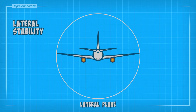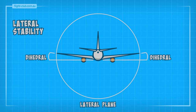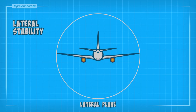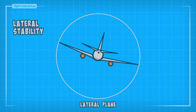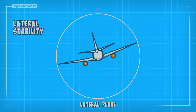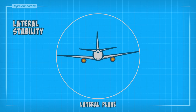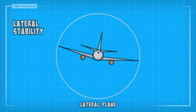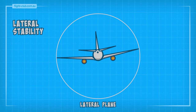Lateral stability can also be further improved with dihedral. Lateral stability may cause the aeroplane to roll back beyond its wings-level attitude in a sequence of decreasing oscillations.